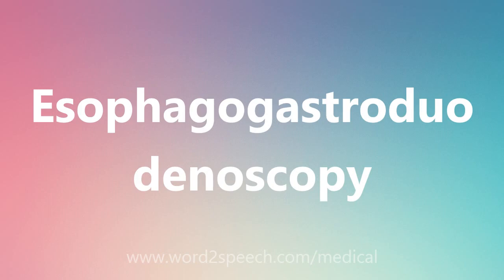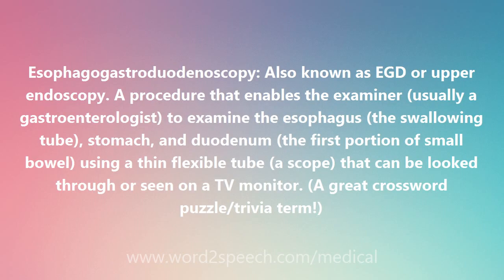Esophagogastroduodenoscopy, also known as EGD or upper endoscopy. A procedure that enables the examiner, usually a gastroenterologist, to examine the esophagus (the swallowing tube), stomach, and duodenum (the first portion of small bowel), using a thin flexible tube — a scope — that can be looked through or seen on a TV monitor.